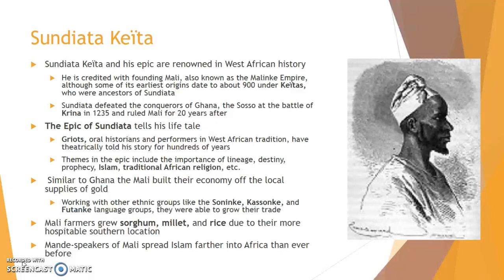Mali's farmers grew sorghum — a grass plant that looks somewhat like corn and from which molasses is derived — millet, another grass plant from which cereal is made, and rice. From the southern center of power, some distance from the fringes of the Sahara, the Mande speakers of Mali spread Islam further than their North African Muslim trader predecessors. Those who led this process were the successors of Sundiata, the Mansas of the Keita clan.